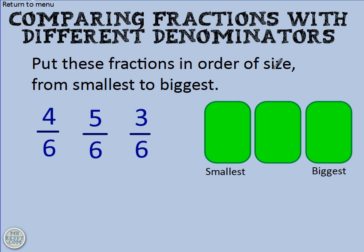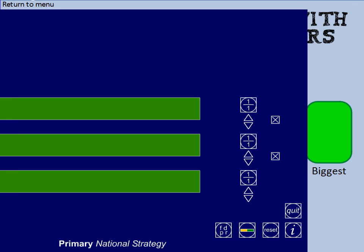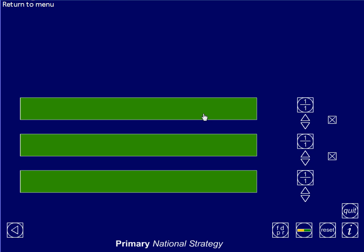Put these fractions in order of size from smallest to biggest: four sixths, five sixths, and three sixths. That's probably very straightforward, but if it seems like a bit of a mystery, let me use a diagram to help you understand. Four sixths, five sixths, and three sixths. Here I have a bar, another bar, and another bar, and I'm going to cut them all up into sixths.